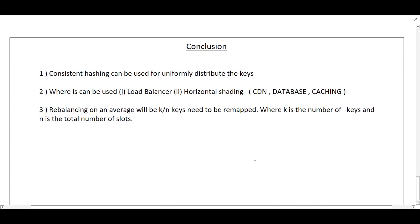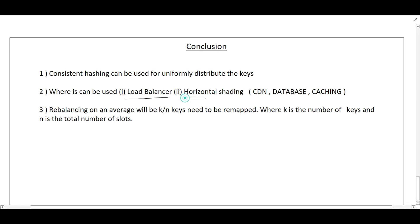Now the conclusion of consistent hashing: it can be used to uniformly distribute keys. It can be used in place of a load balancer when distributing requests. It can also be used in horizontal sharding to scale CDN, databases, and caches — consistent hashing distributes requests uniformly there as well. When using consistent hashing, only k/n remapping — rebalancing — is required, where k refers to the number of keys. This is all about consistent hashing. Please subscribe to my channel for more updates on system design topics.